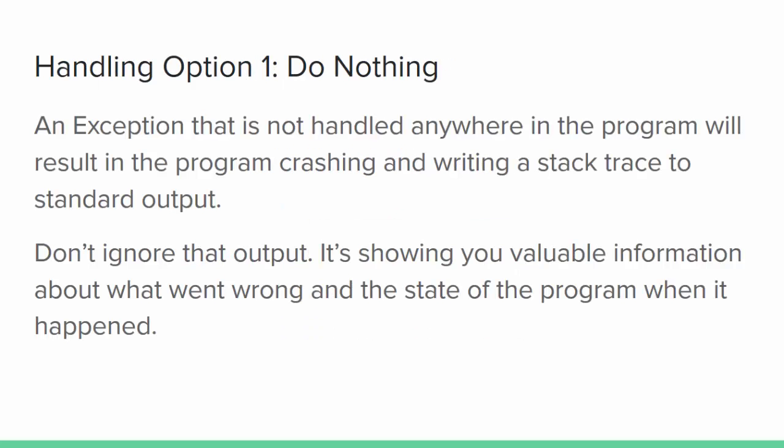Exception objects are created and thrown when an exceptional situation is recognized. The moment the exception is thrown, the Java runtime environment breaks out of the standard flow of control and enters the exception flow. Your code at that point has the opportunity to deal with the exception in one of three ways. The first option is the one you're already familiar with — do nothing. The result is that the program will crash and a stack trace, which is a view of the call stack at the time the exception was thrown, gets written to standard output, which is usually the console.